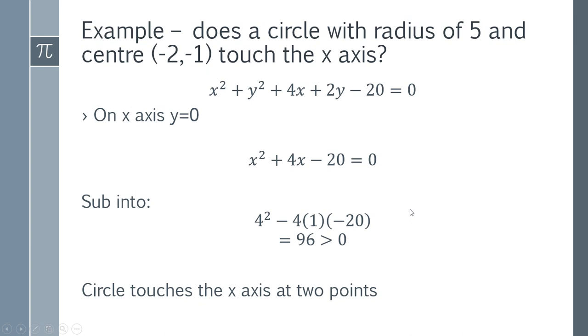So in this case, the circle touches the x-axis at two points. So our circle is intersecting the x-axis. It's not just touching at one point. It's actually all the way through the x-axis. And you can tell exactly what situation you've got by interpreting this value. If we got it exactly 0, that would mean it was touching at one point. And if we got a negative number, then it wasn't touching the circle at all.